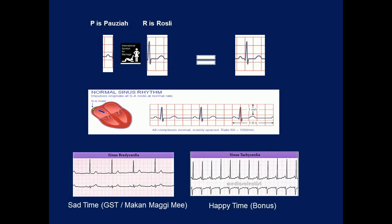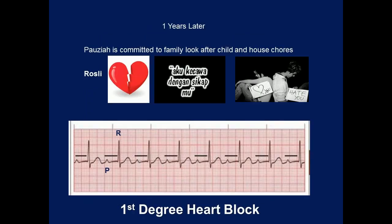One year later, Pazia (P) is committed to family — looking after her child, house chores — and gives excuses such as headache, tiredness, and reluctance to have personal time with Rossley (R). Rossley feels that he is being neglected and can't spend some personal time with Pazia. This leads to friction in the married relationship. This is what is known as First Degree Heart Block.